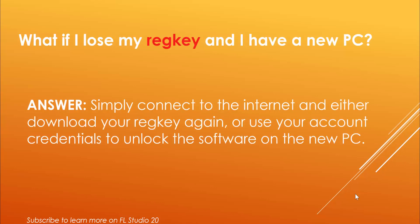Imagine you have a PC where you've installed your reg key — I have a tutorial on that on my channel, check the top right corner of this video for the link. Let's say your PC suddenly stops working permanently and you get a new PC. Where is your license? Your reg key is stored in your Image Line account, so at any time, anywhere, simply log into your Image Line account on a PC or mobile phone, download your reg key, and reinstall it.